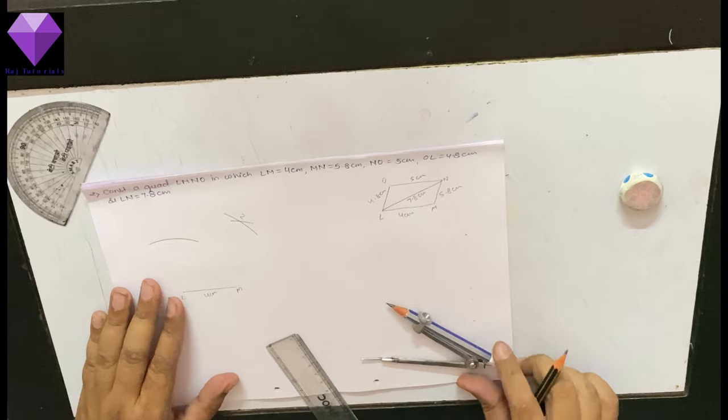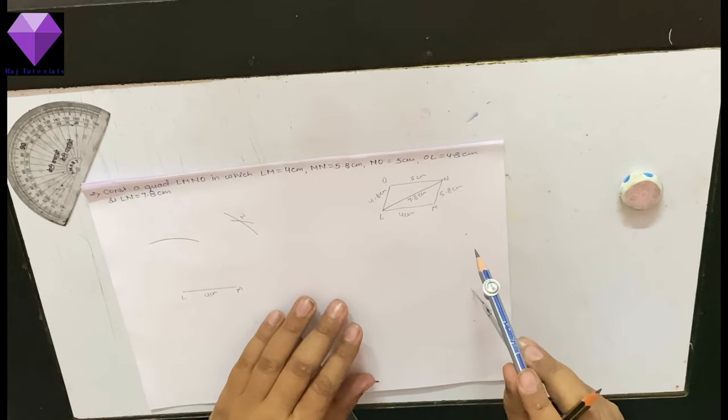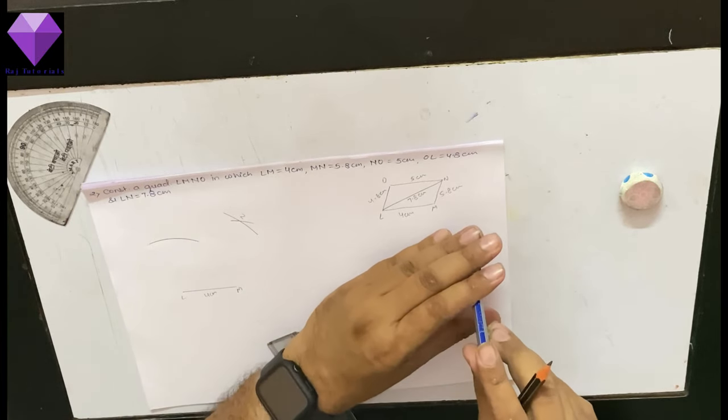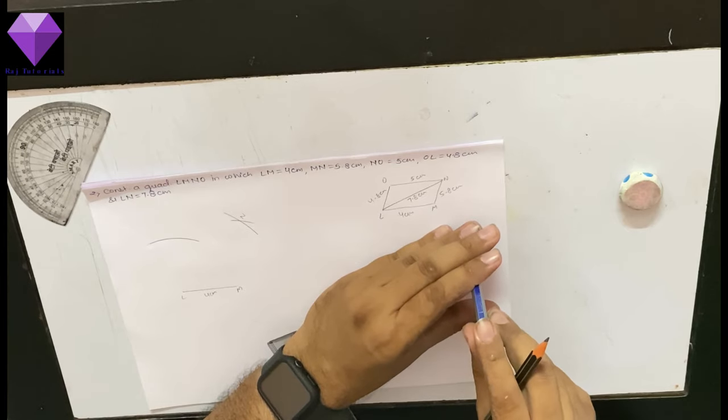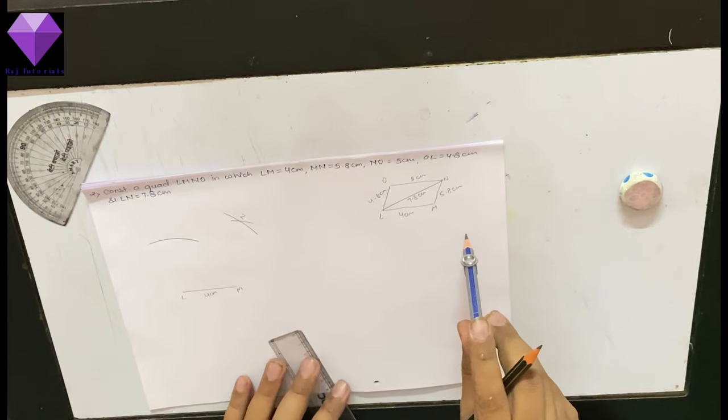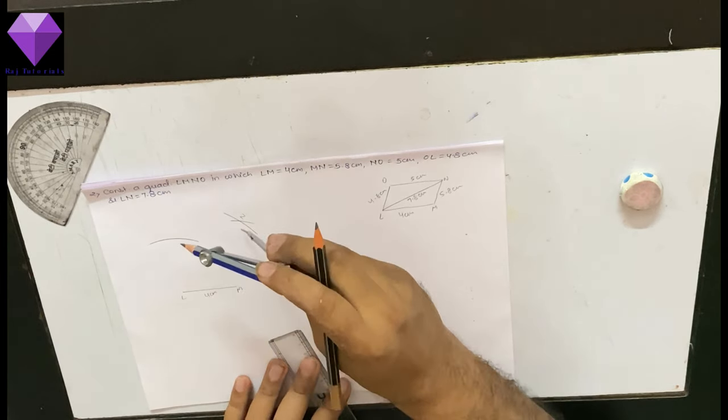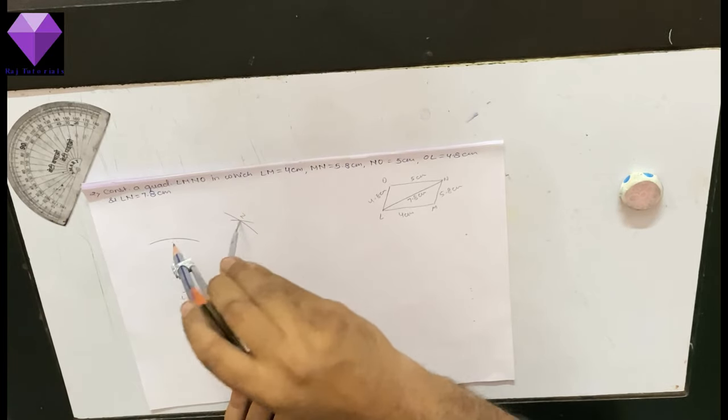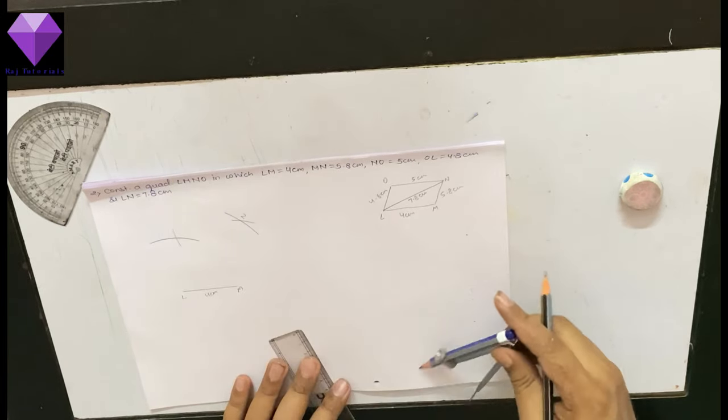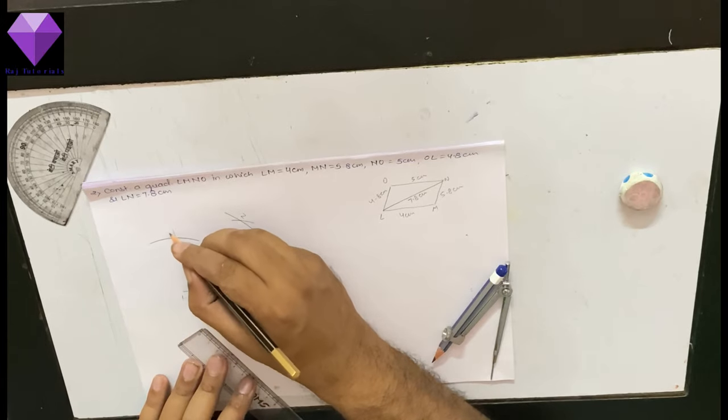Now I need O point. So for O point, I need 5 cm radius line segment. I have measured in my rounder 5 cm, and with N as the center, I am marking 5 cm. So this is my O.